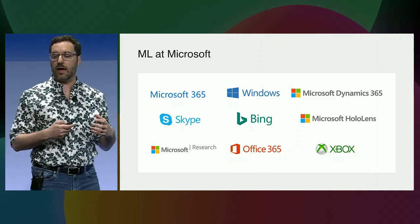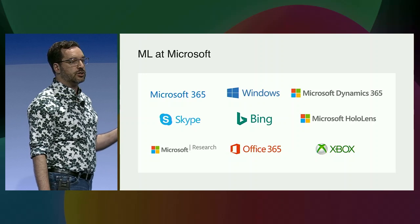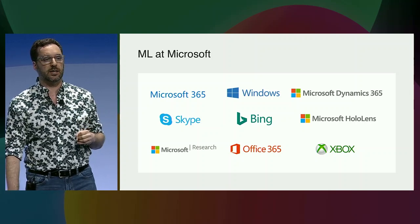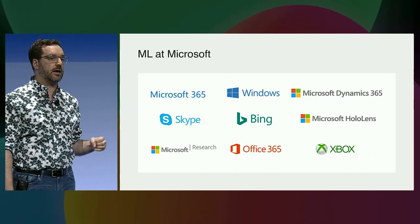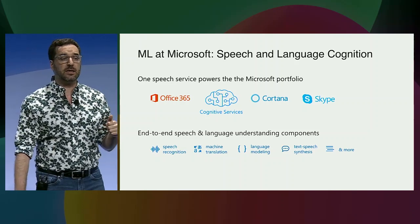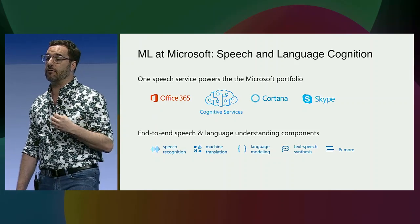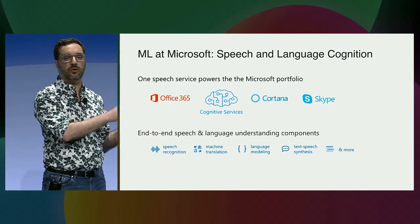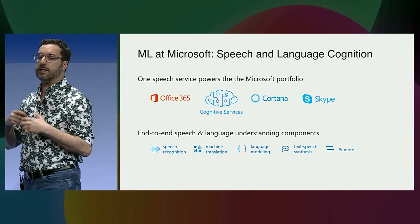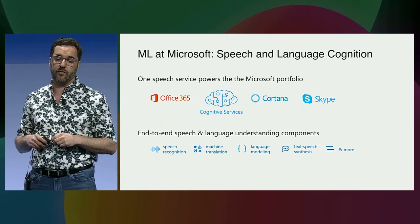AI and ML touch literally every product at Microsoft — every consumer client app, server side, games, research, Bing. We use ML in all of these categories because it's so important to use this massive volume of data in an intelligent way. I want to dive into one specific example: the 18 billion queries Cortana processes, which represent a lot of our NLP work. Previously we had individual groups starting up their own NLP work, but it led to duplication and other issues that really hurt our overall productivity.